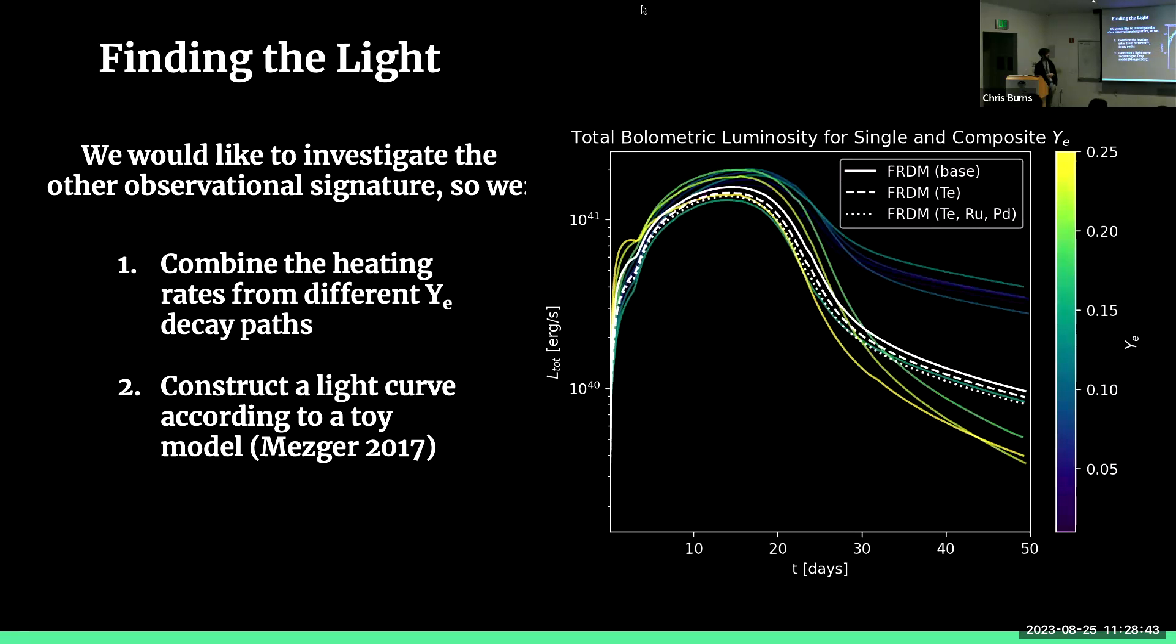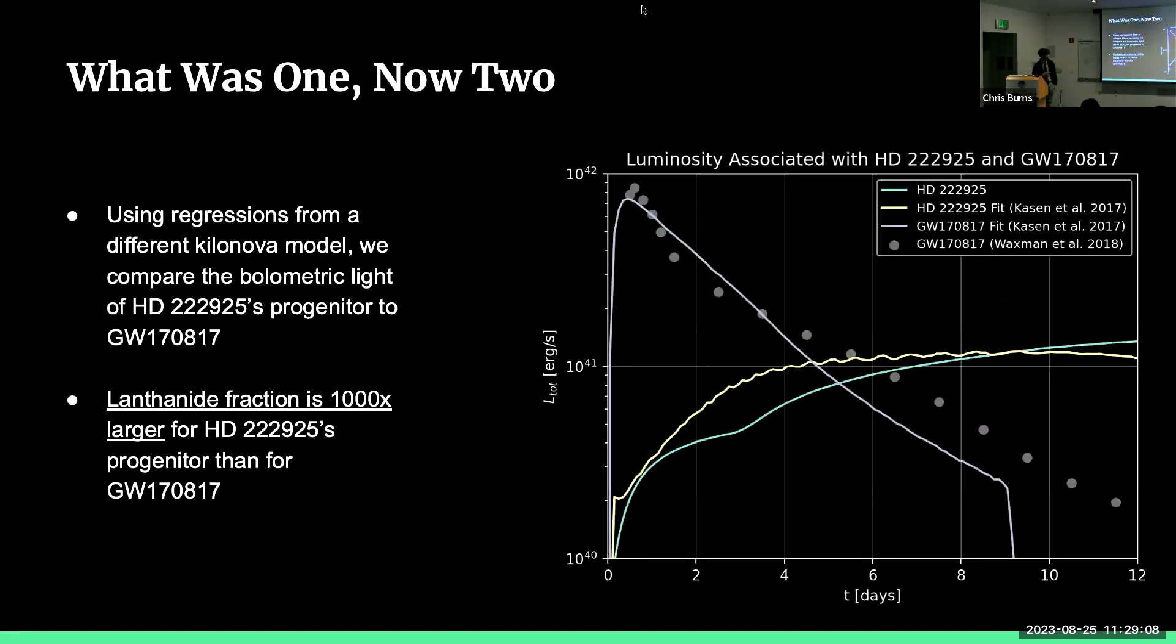And then that's how we get these white curves over here. These are just different fits to different stellar abundances. They don't matter too much in the scope of this project. And this is basically the answer to the first question that we had for this project. These are the kilonova light curves of HD22925's progenitor. So what was one is now two. And now we have two kilonova light curves. And we can compare them with the past one event that we've seen.